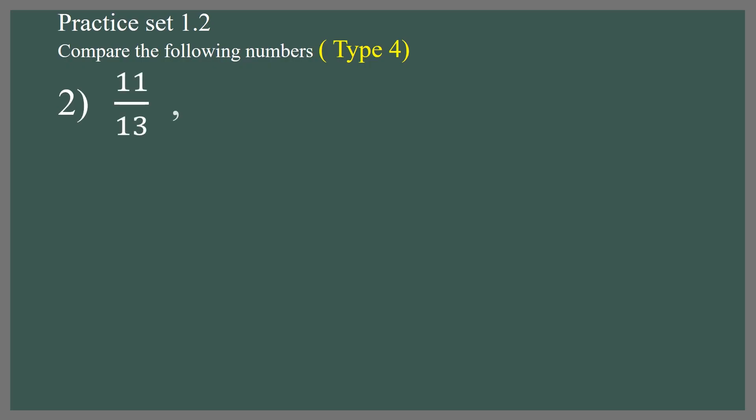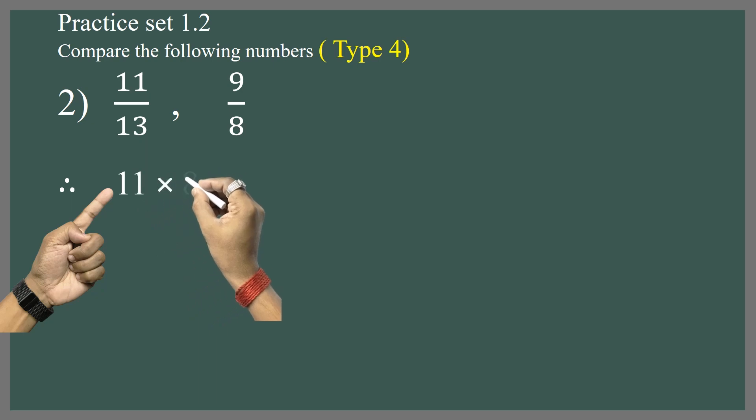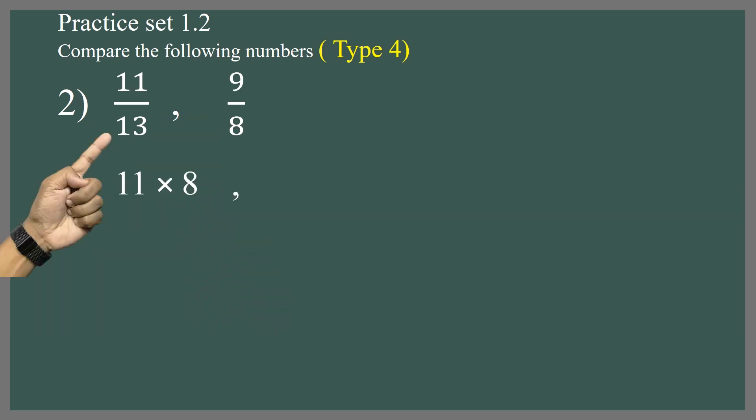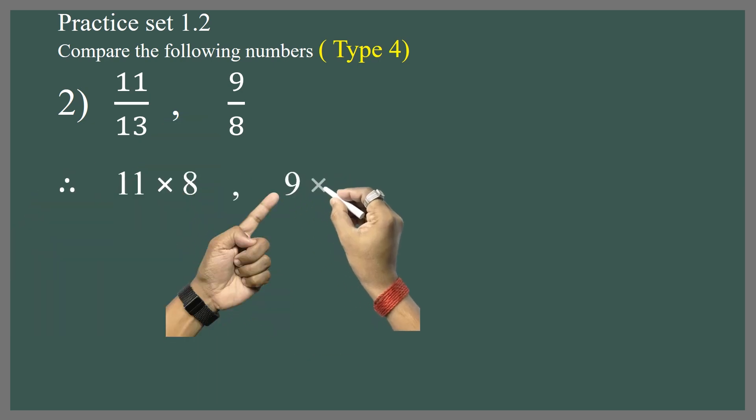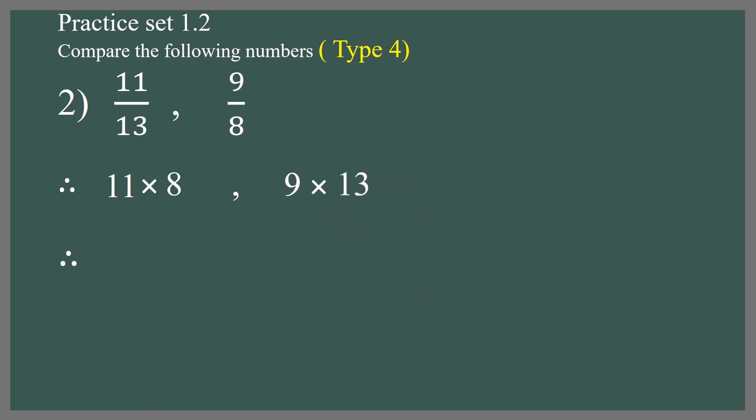Azo nek example baguya. 11 upon 13 and 9 upon 8. First step, cross multiplication. Hence, 11 into 8 and 9 into 13. 11 into 8, 88, and 9 into 13, 117.